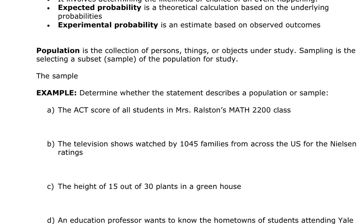Let's determine whether statements describe a population or a sample. Example A: the ACT scores of all students in Mr. Raulston's Math 2200 class. The keyword here is 'all of the students' — so that's a population. The word 'all' usually implies population. A sampling could be the students who had his class in the fall or spring, or ten years ago, and from that we could make inferences about all the students. Example B: the television shows watched by 1,045 families from across the U.S. for the Nielsen ratings. The Nielsen ratings make an inference about the population of all families watching TV, so 1,045 would be a sample.